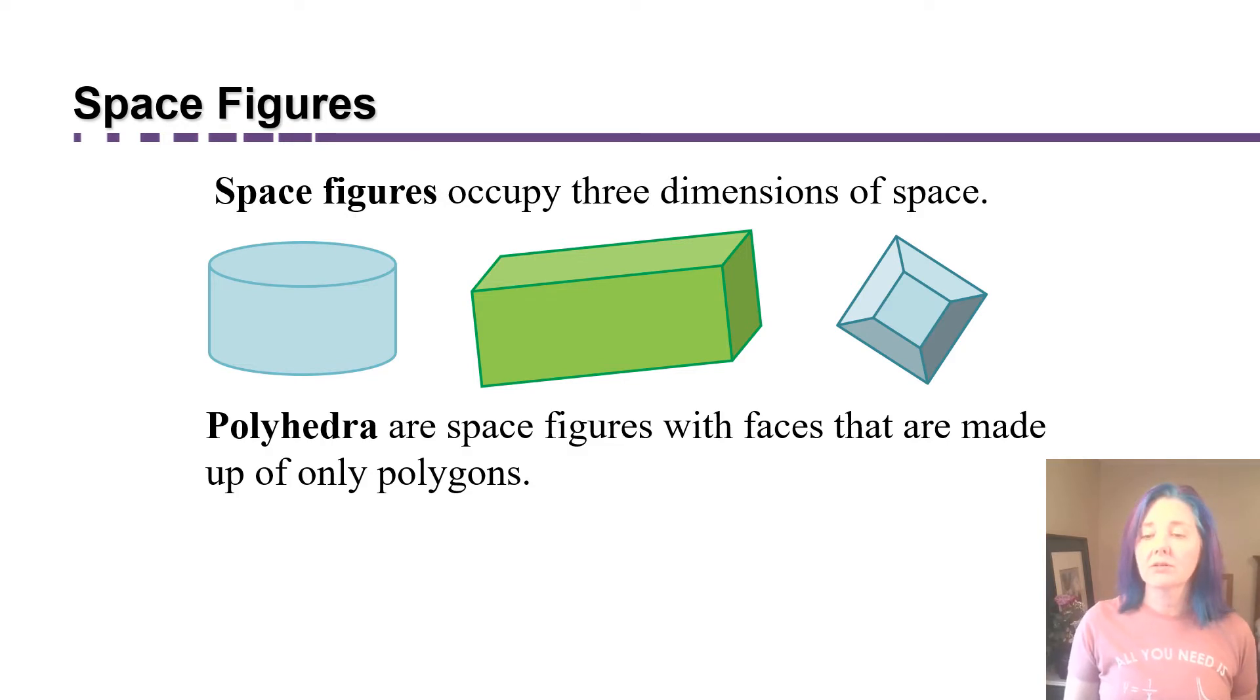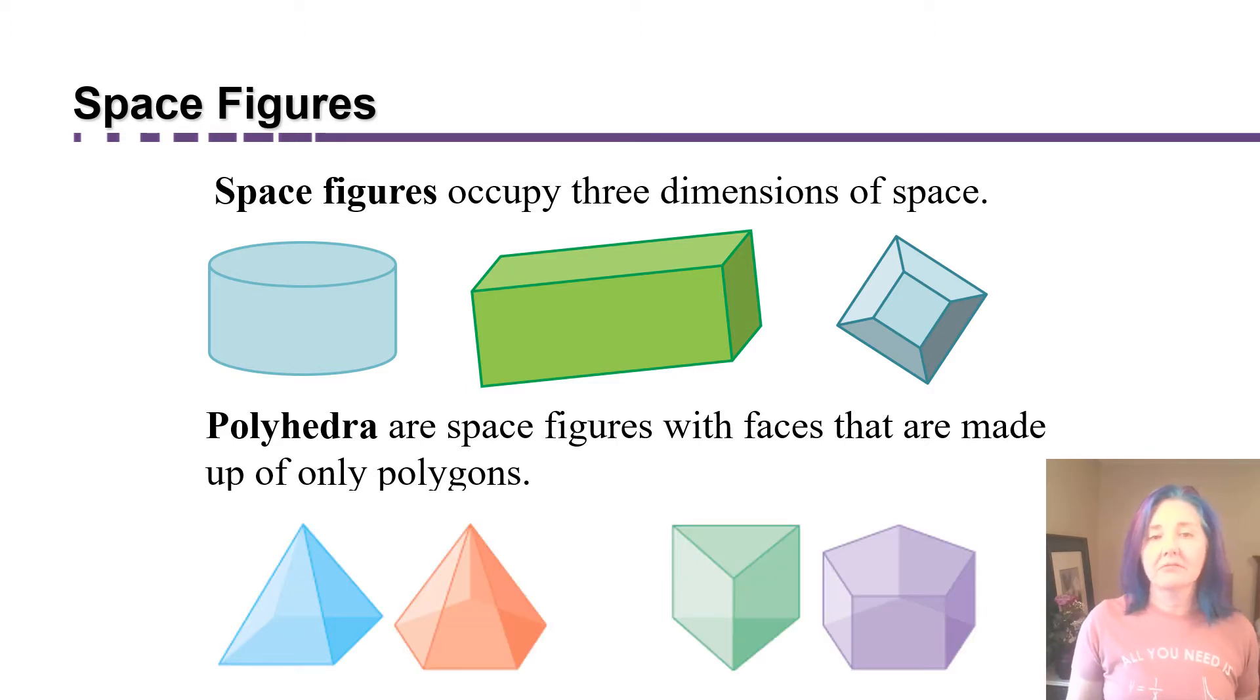Polyhedra are space figures with faces that are made up of only polygons. And so we might have figures made up of triangles or squares, pentagons, or any combination of them.